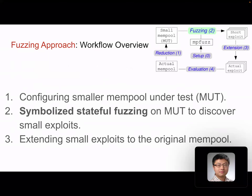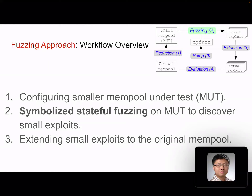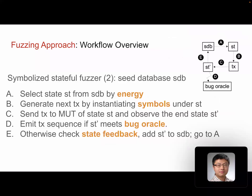This is the overview of the workflow using MPFuzz. First, we configure the memory pool to a smaller size — this smaller memory pool is what we call memory pool under test, or MUT. Then we run the symbolized stateful fuzzer against the MUT to discover short or small exploits. The third step is to extend the small exploit to the original memory pool. Among these three steps, the first and third steps are manually done, and the second step is fully automated in this work. Next, I'm going to dig into the second step — what kind of algorithm we designed, and what kind of techniques we embedded to speed up the processing.